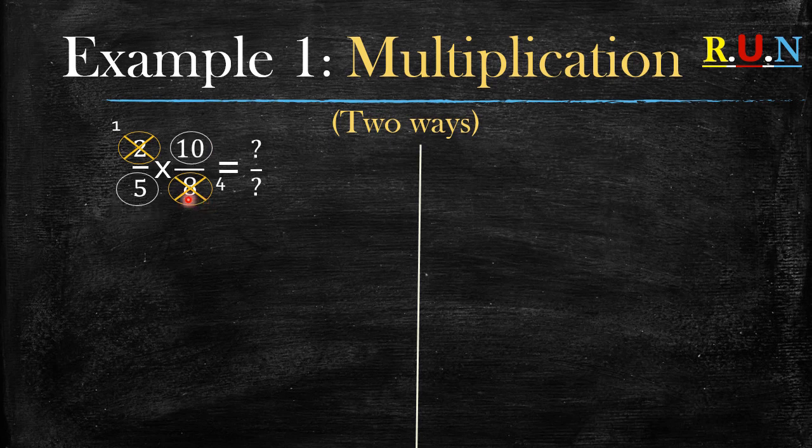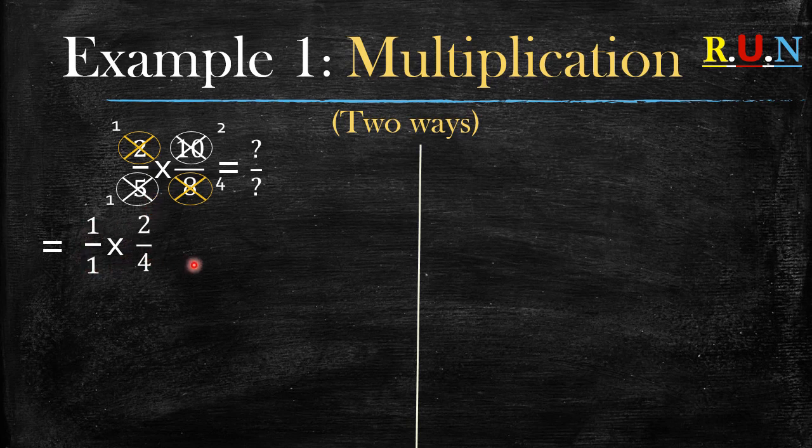The same goes for this two. Use the highest common factor as well to simplify this two. So the ten becomes a five and the two becomes a one as well. Basically we are left with something like this. What do we do from this part?